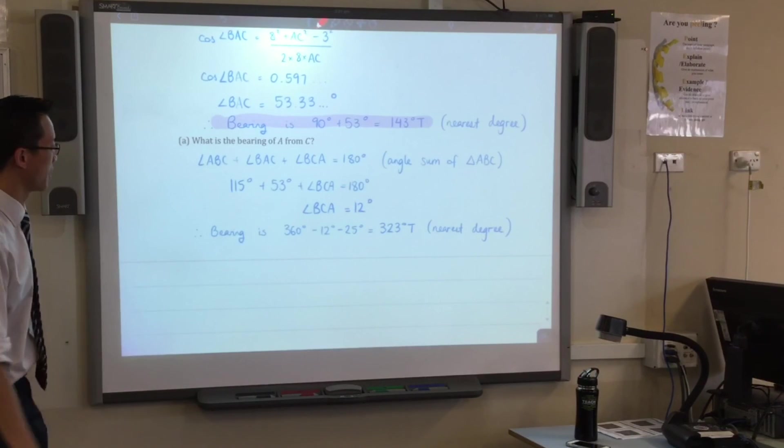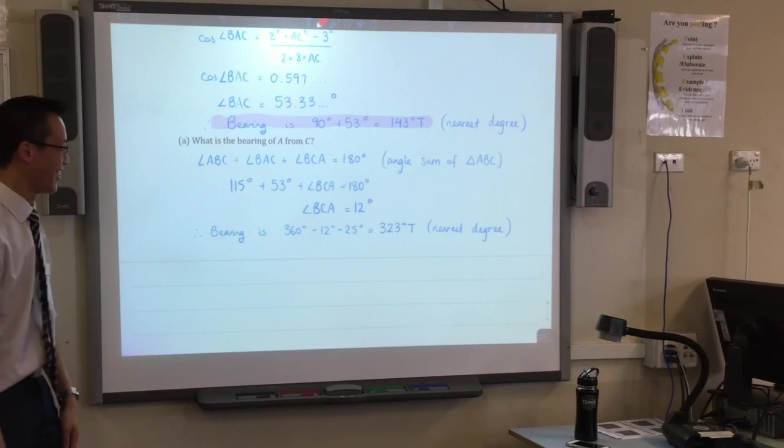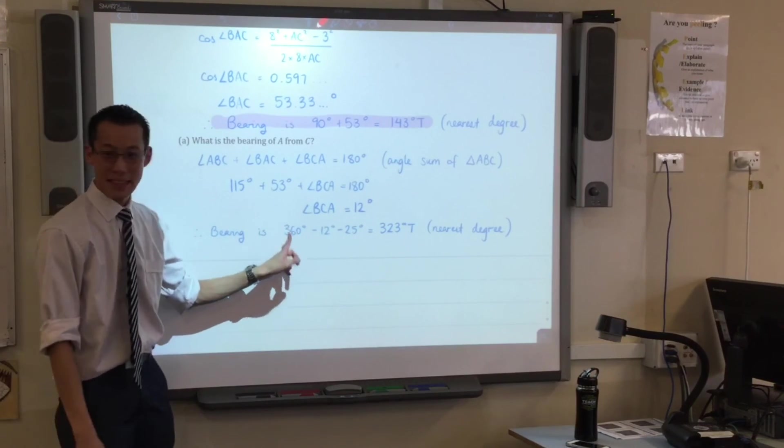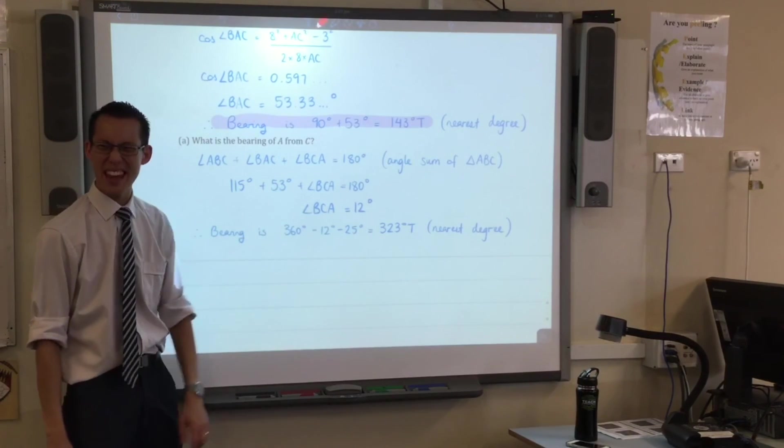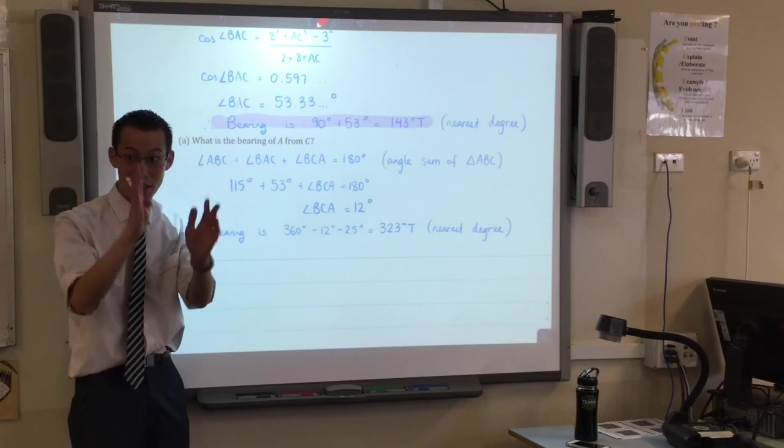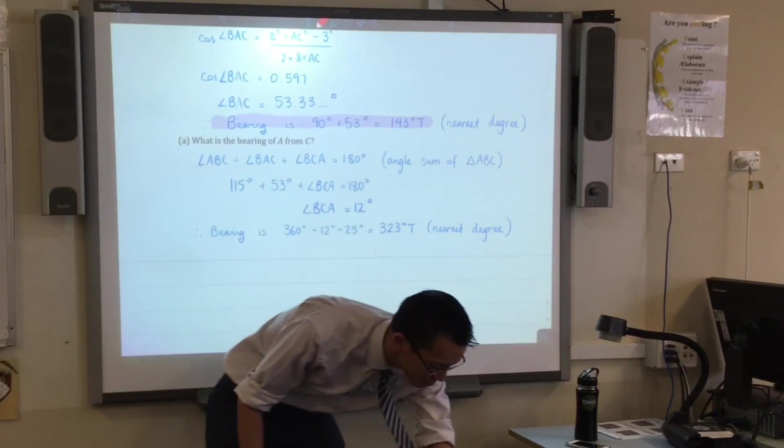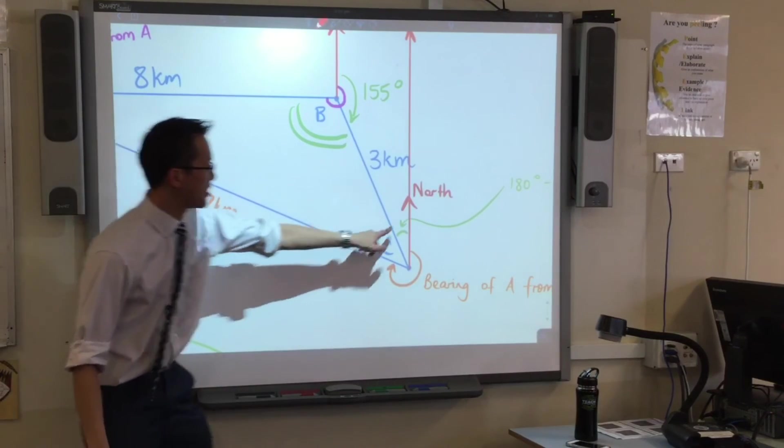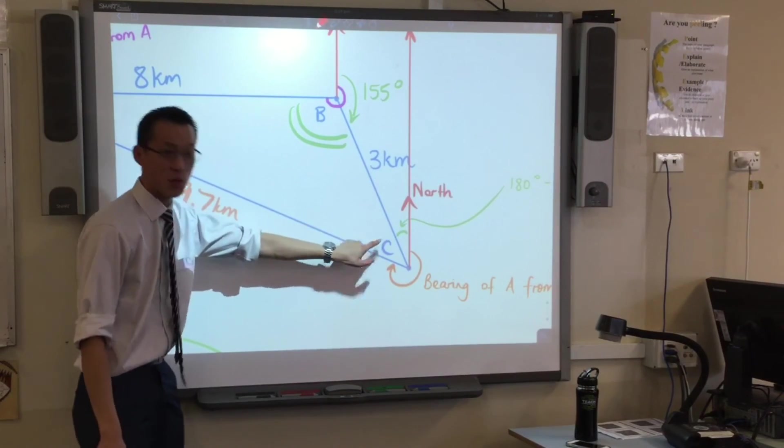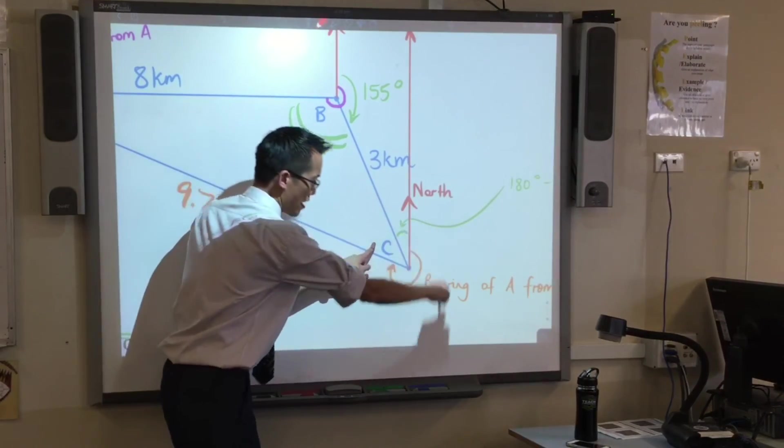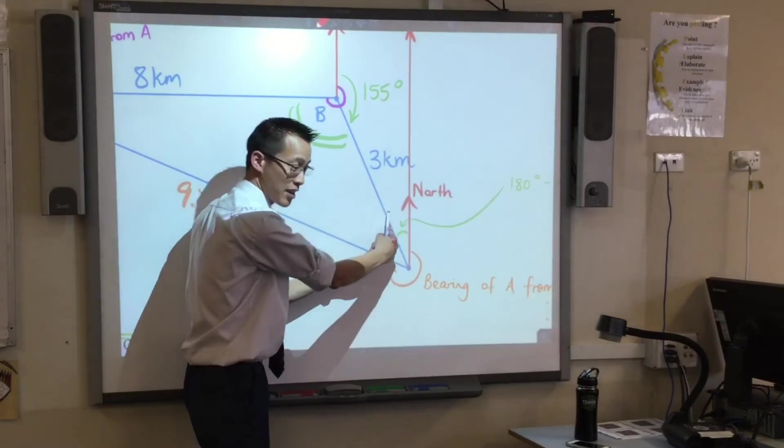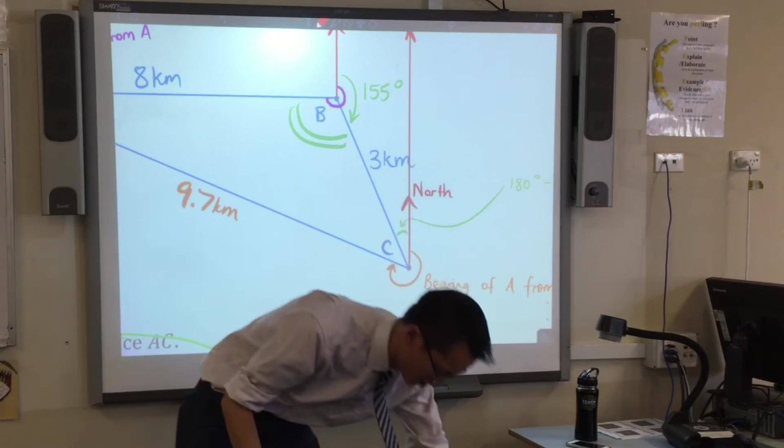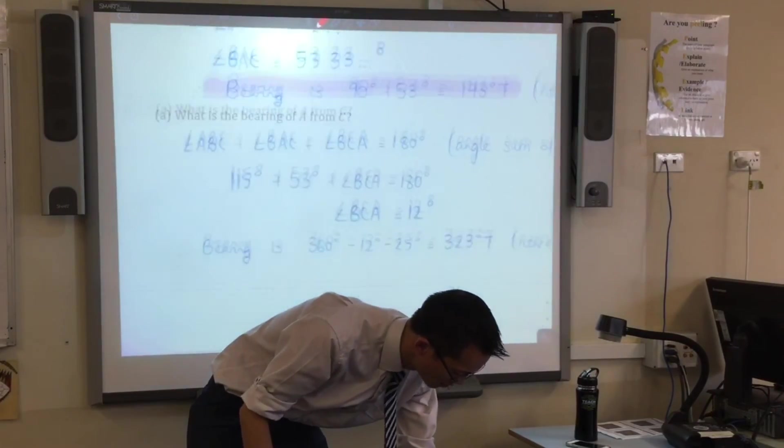But then, do you remember what I was going to do with that angle? This is hard. This is, we're at the very end. You're going to add it to the 25. Yeah. So I found this is 25. This is 12. So 360 take away 25 and 12 is 300 and, I can't remember. 323. That's the answer.